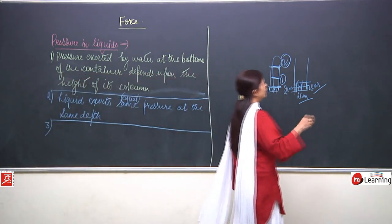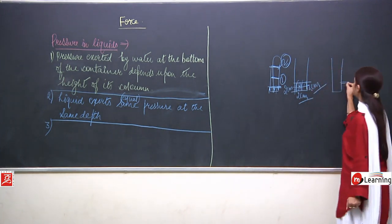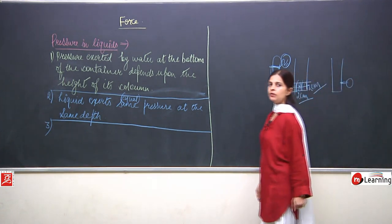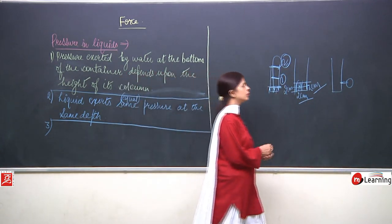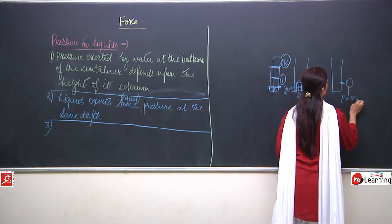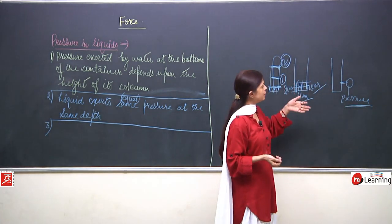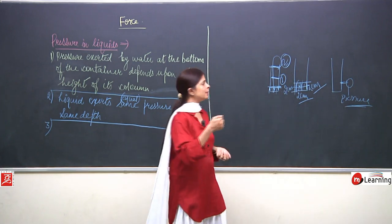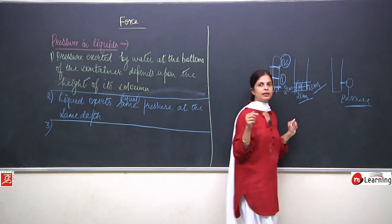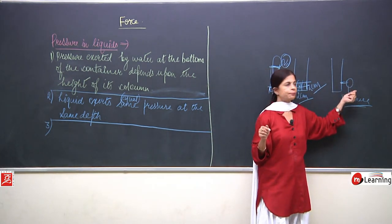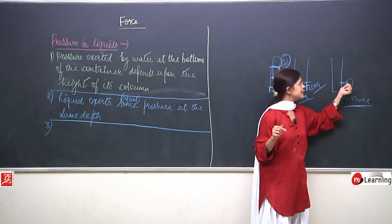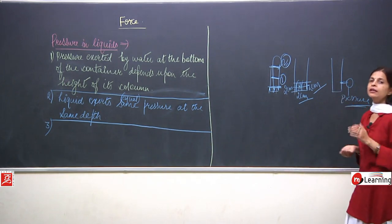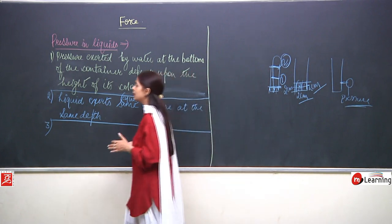Third point: to prove that liquid also exerts pressure on the walls of a container. A bottle is taken, a hole is made in the wall, and a balloon is attached to a pipe inserted through the hole. When the bottle is filled with water, the balloon inflates — the water pushes out through the wall. This proves that liquid exerts pressure on the walls of the container as well.